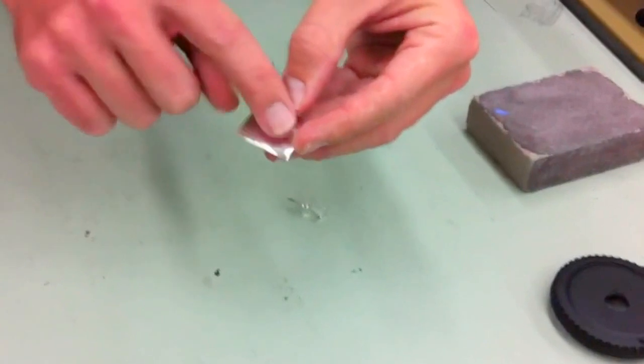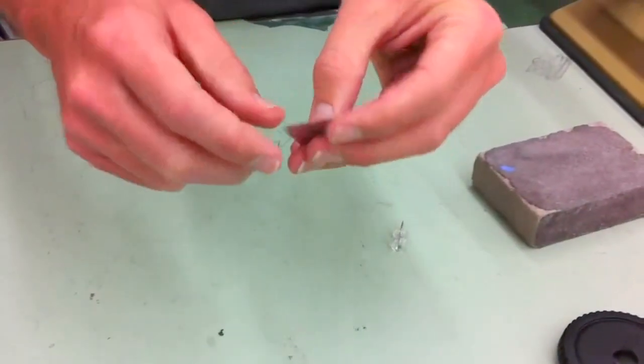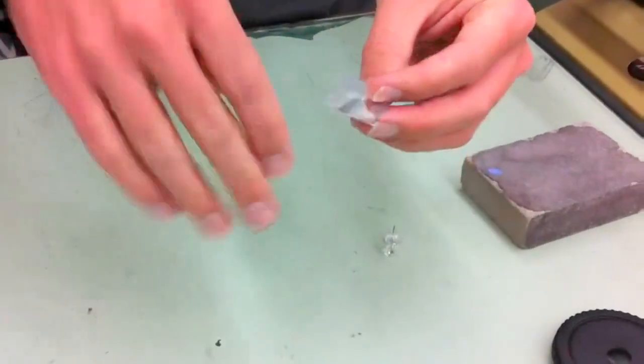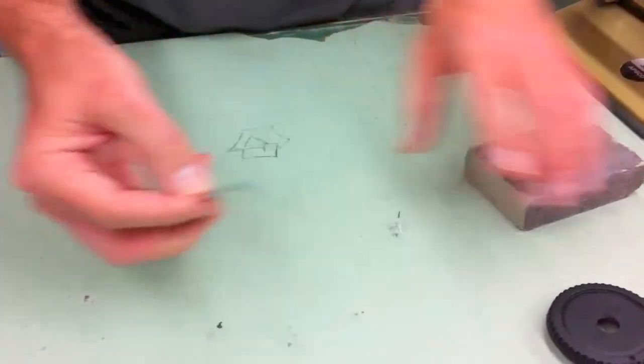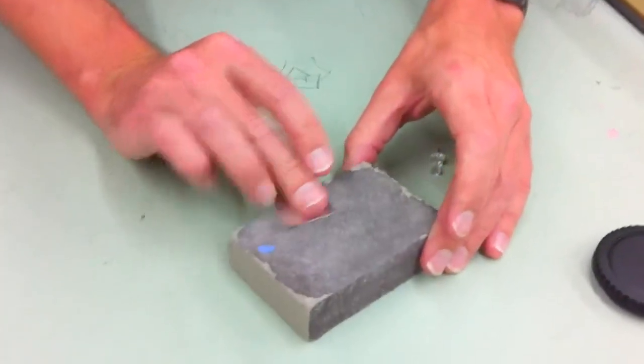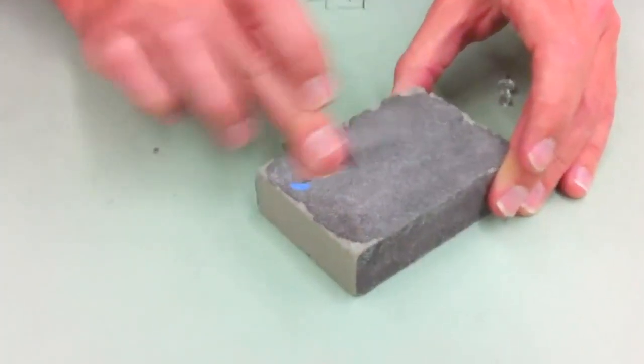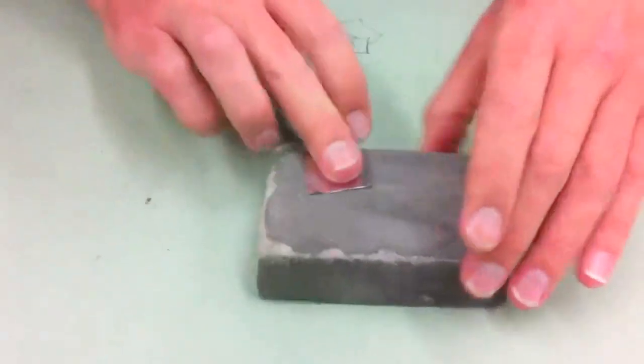But if I feel it now with my finger, it's rough, especially on one side. The material is pushed through. So, on this rough side, I'm going to take a little sanding block and just lightly sand the hole.